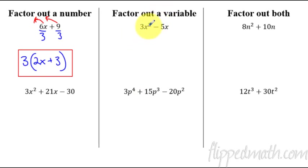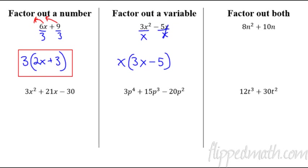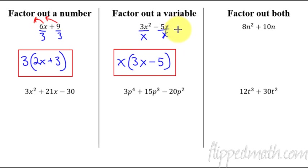Next: factoring out a variable. There's no number to divide out here — we're just looking at the variable. Both terms have an x, so I divide out an x and put it on the outside of the parentheses. The fraction simplifies to 3x minus 5 inside. So the answer is x(3x − 5). To check, distribute x back to 3x and to −5, and you get what you started with.